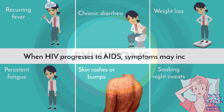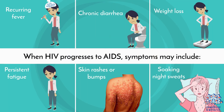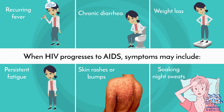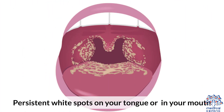When HIV progresses to AIDS, symptoms may include recurring fever, chronic diarrhea, weight loss, persistent fatigue, skin rashes or bumps, soaking night sweats, and persistent white spots on your tongue or in your mouth.